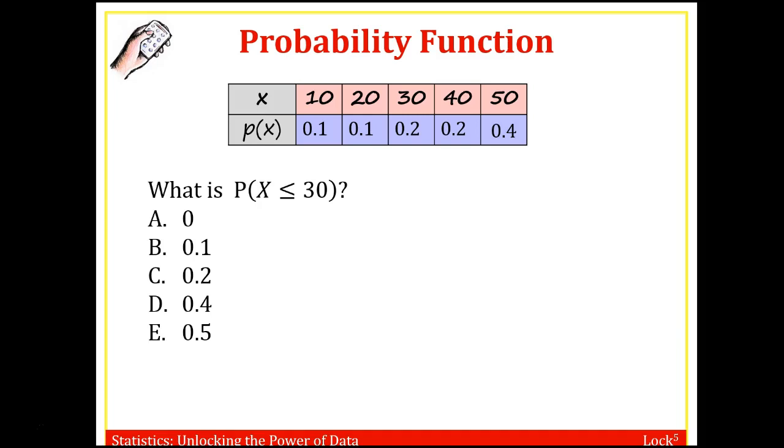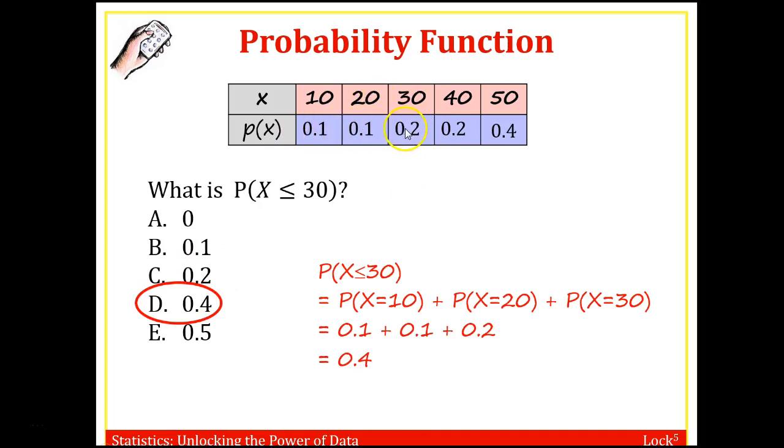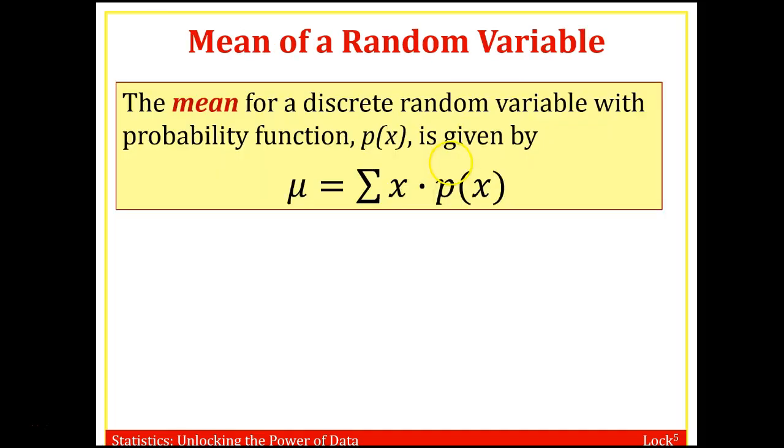Alright, so we have this probability function. What is the probability? Interpreting this notation, this is the probability that X is less than or equal to 30. Alright, so with this problem, don't forget this little line means we want to include 30. So what's the probability that X is less than or equal to 30? I need to combine all of these. It could be 10, 20, or 30. We're including 30. So we get 0.1 plus 0.1 plus 0.2 to get 0.4 is the probability that X is less than or equal to 30.